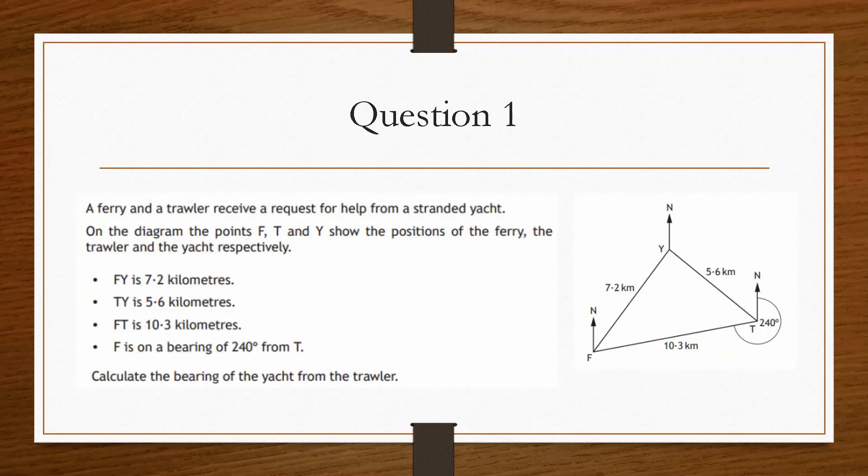Now if we take a look at the first question, it gives us a ferry and a trawler which receive a request for help from a stranded yacht. Now on the diagram, F, T and Y show the position of the ferry here, the trawler here and the yacht. Now it says that between F and Y is 7.2 kilometres, 5.6 kilometres between Y and T, and 10.3 between F and T.